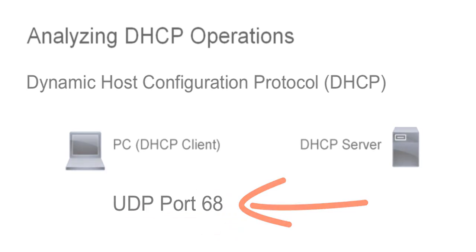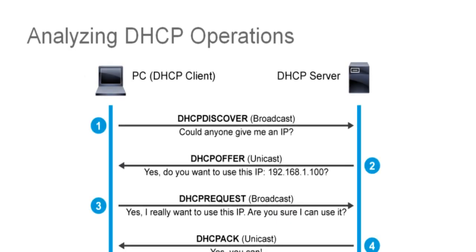Let's take a closer look at some of the messages that are exchanged between the client and the server during a DHCP negotiation. We'll start off with the DHCP discover message. When a device such as your laptop connects to a network and is configured as a DHCP client on its interface, it sends out a DHCP discover message. This broadcast message on the local subnet uses UDP port number 67 in search of a DHCP server in order to obtain an IP address.